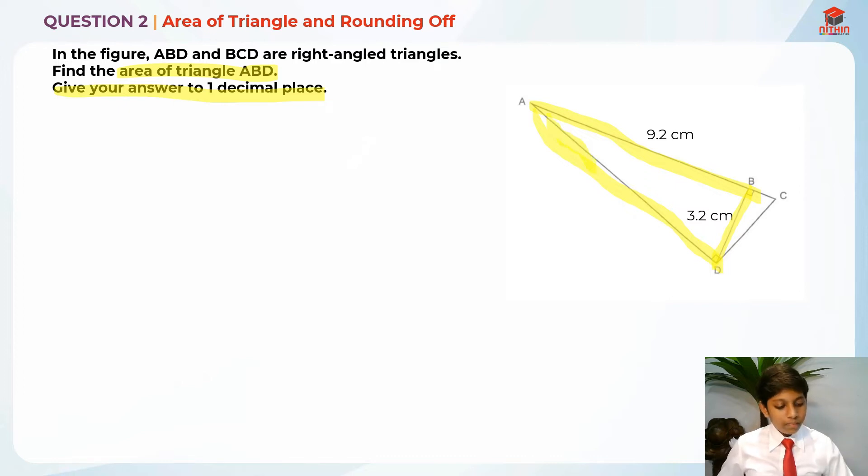The base. So in order to find the area, we need to know the formula. The formula is the area of triangle ABD is basically half times base times height. The base is 3.2 cm and the height is 9.2 cm. So you take half times 3.2 cm times 9.2 cm.